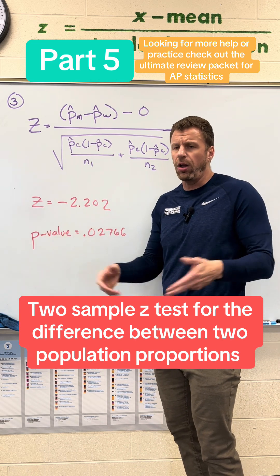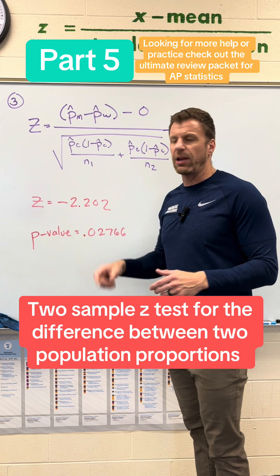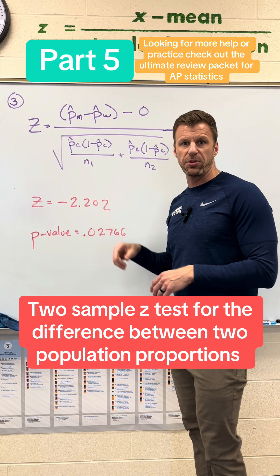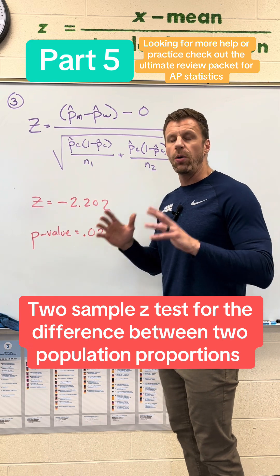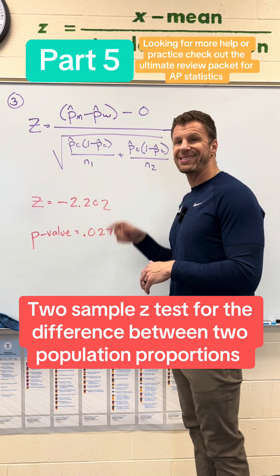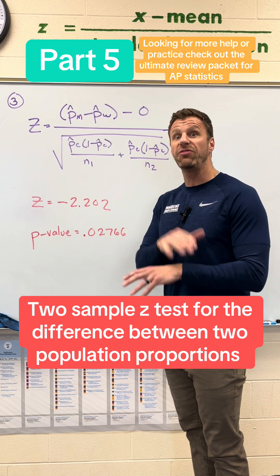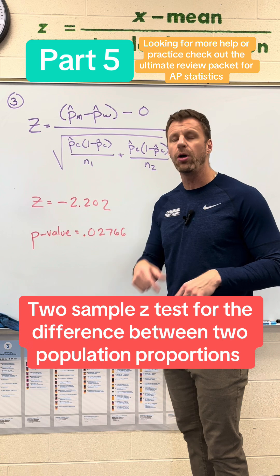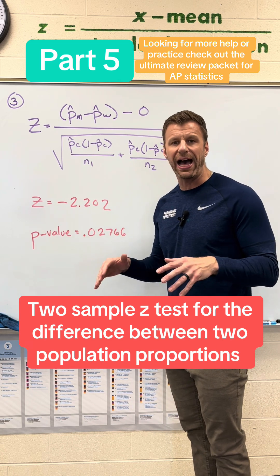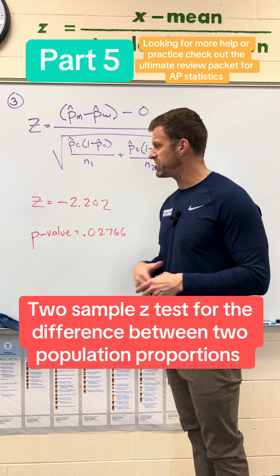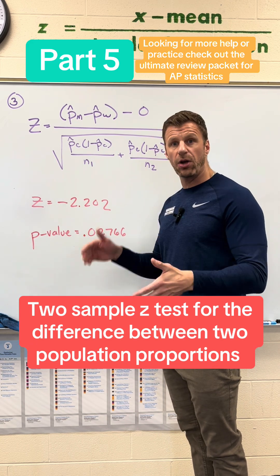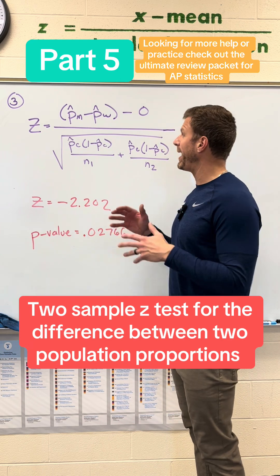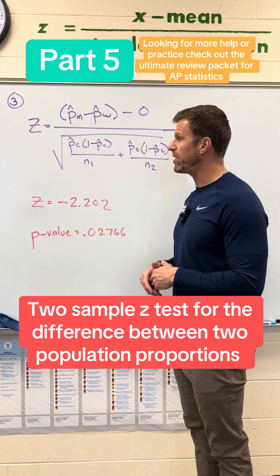We use p-hat combined because under the null hypothesis we're saying the proportions are the same, so that 0.356 is used in both spots against our sample sizes. That's a really important distinction — that's where the combined standard error is used, which is very different than a confidence interval, because in an interval we do not have that assumption that the difference is zero. With your calculator, you can get your z-score and p-value directly.